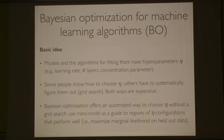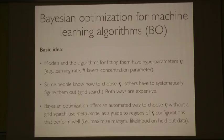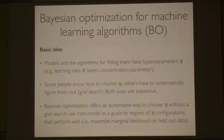The premise is that we have all these models and approximate inference procedures for fitting them, and they usually come with hyperparameters eta. That could be the learning rate, the number of layers, or the concentration hyperparameter. Some people know how to choose eta. Others have to systematically figure them out using something like a grid search — and both ways are expensive. Either you need ten years in the field, or you do thousands of runs of an approximate inference algorithm. Bayesian optimization offers a way to choose eta without grid search.